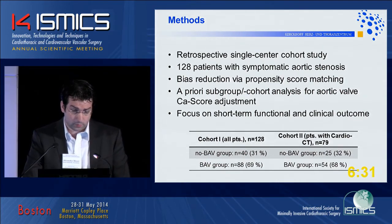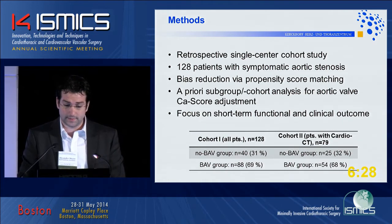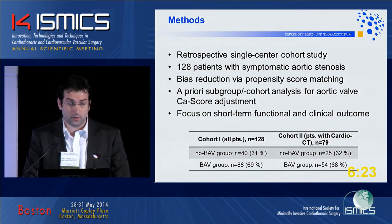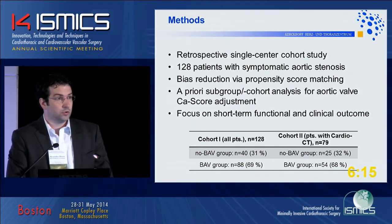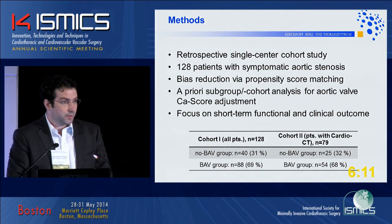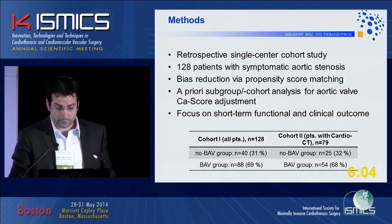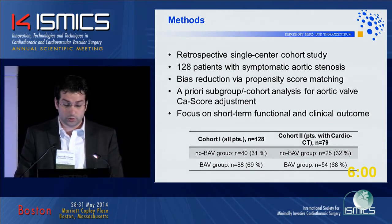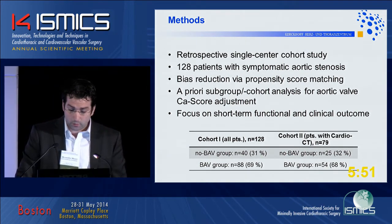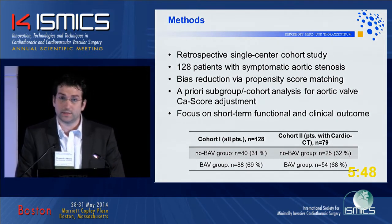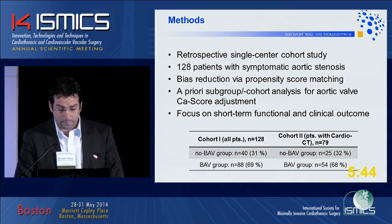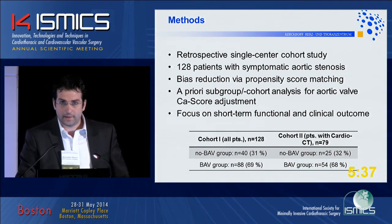To assess those points, we conducted a retrospective single-center cohort study. We enrolled 128 patients with symptomatic aortic stenosis. In order to have a valid comparison among groups, we utilized propensity score matching to minimize bias. We also defined a priori a subgroup analysis for patients for which valid CT data of the calcium score of the aortic valve was available. On the lower side of the slide you can see our two cohorts: cohort one includes all 128 patients, and cohort two is a subset of 79 patients with valid CT data. In both groups, approximately 30% of patients underwent no pre-ballooning.